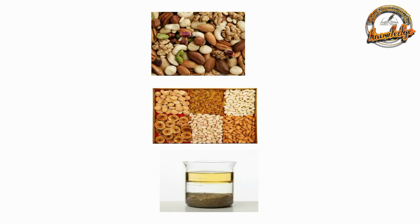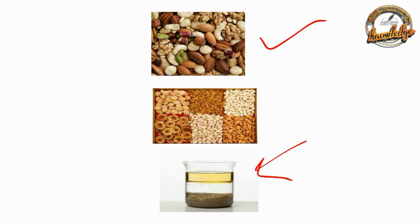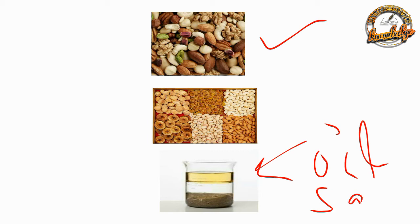For example, a mixture of different types of dry fruits can be separated by a physical method. Other examples of mixtures include oil and water, and scent mixed with water.